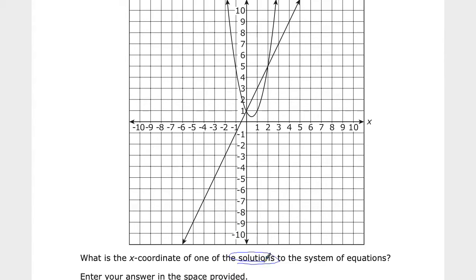A system of equations is when we look at two different functions. Right now we have a linear function, that's the line, and then we have a quadratic function, that's this parabola here. And we're going to see if there's any points that they have in common. The solution would be the points of intersection.